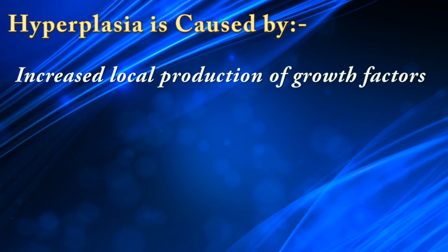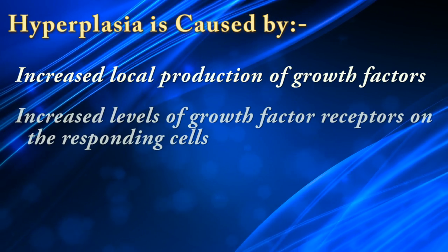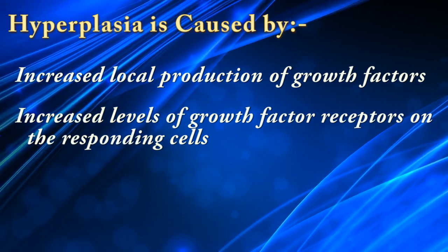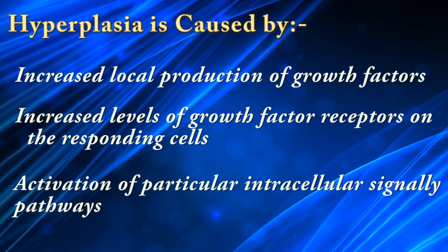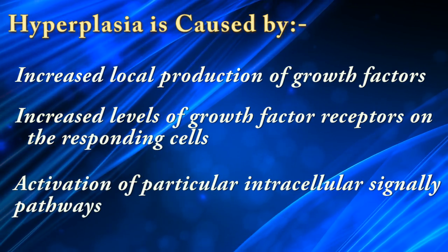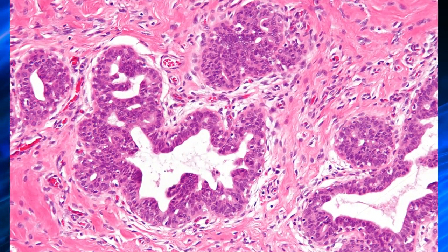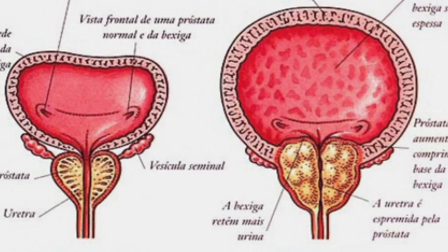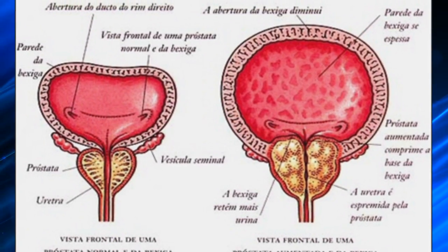The mechanism of hyperplasia is generally caused by increased local production of growth factors, increased levels of growth factor receptors on the responding cells, or activation of particular intracellular signaling pathways. All these changes lead to production of transcription factors that turn on many cellular genes, and the net result is cellular proliferation.